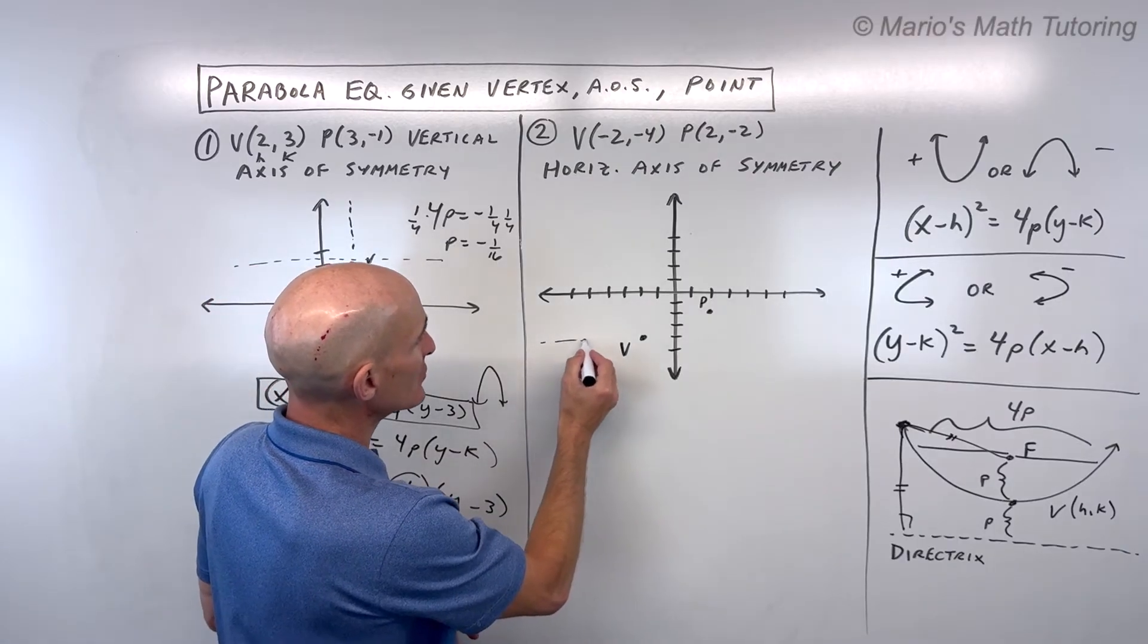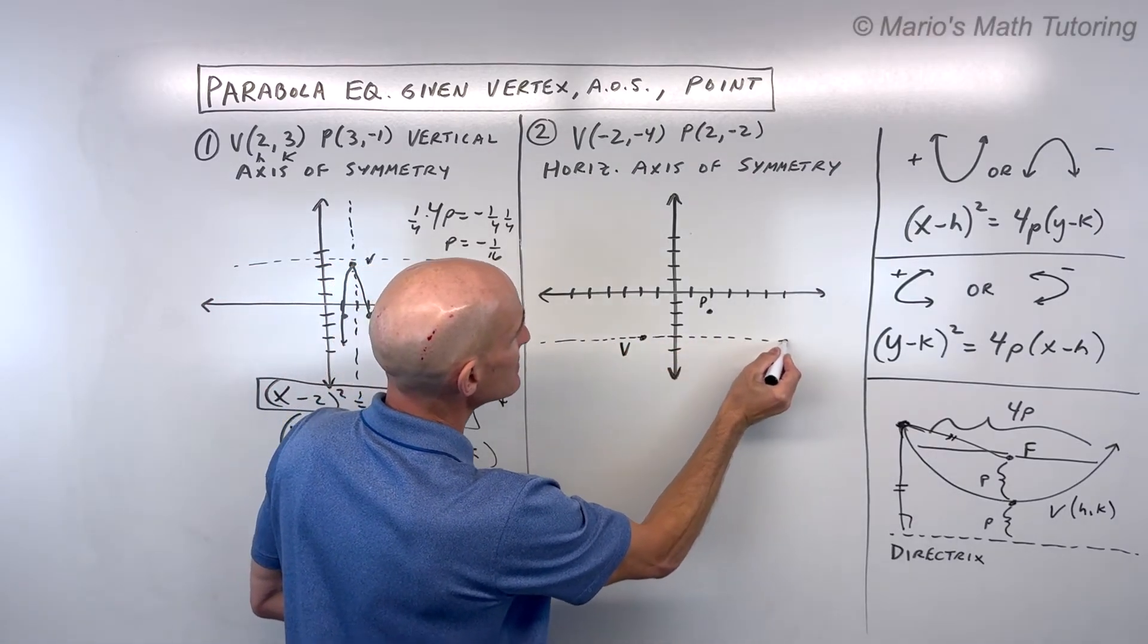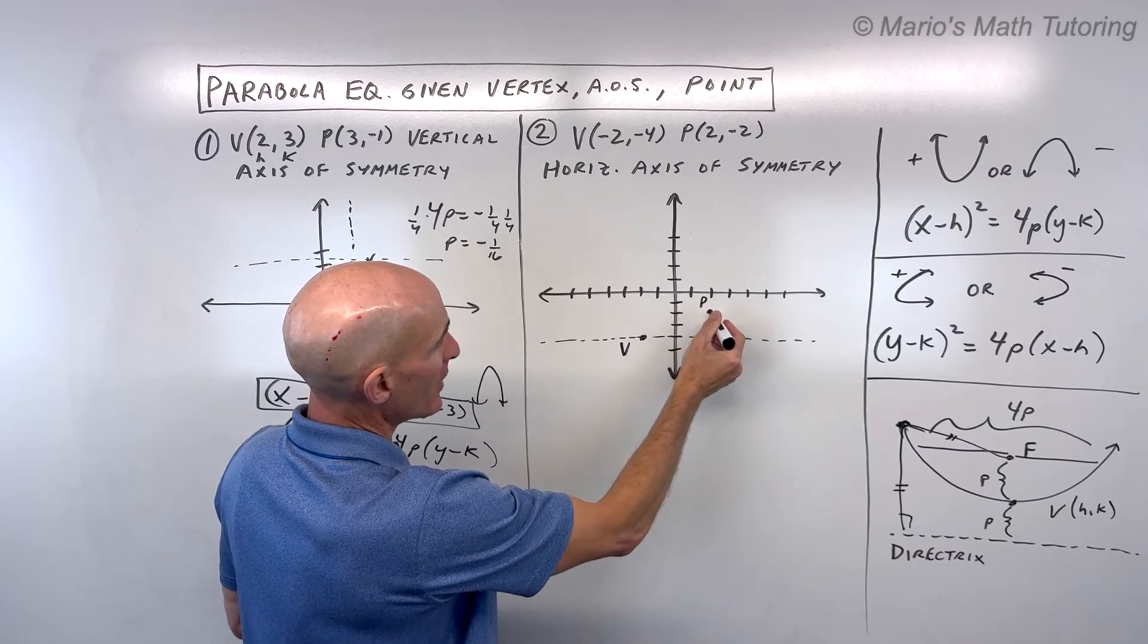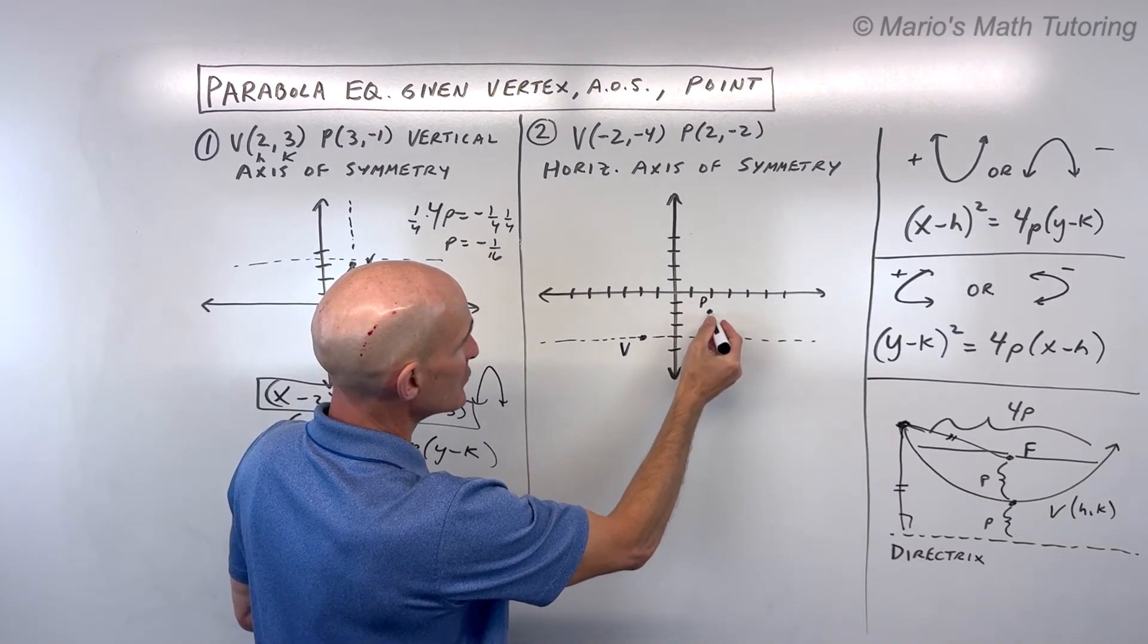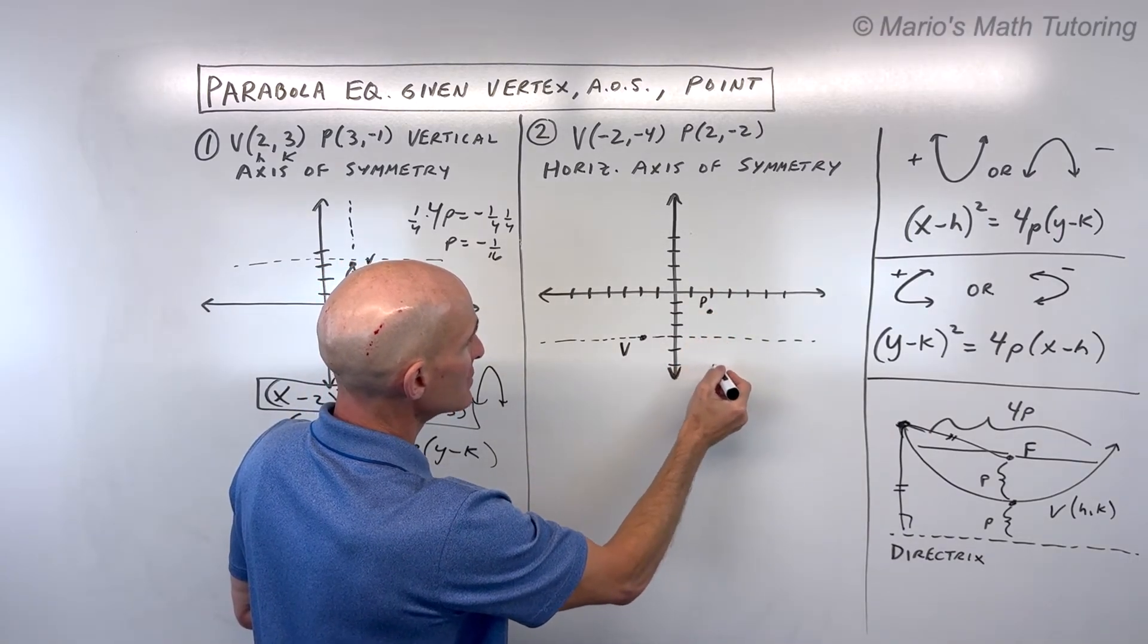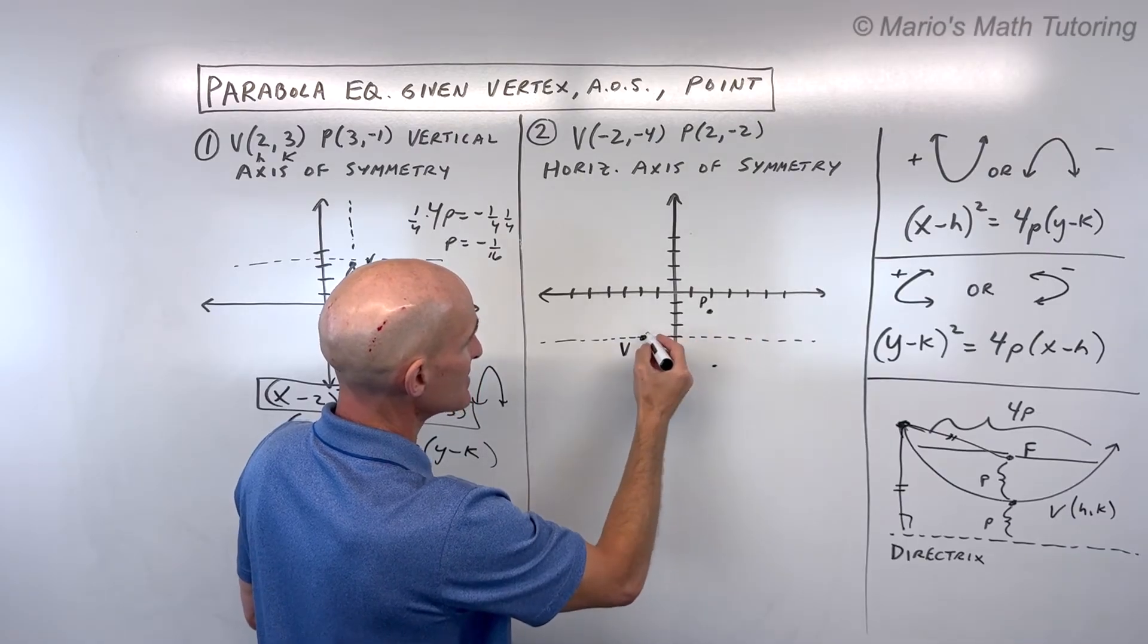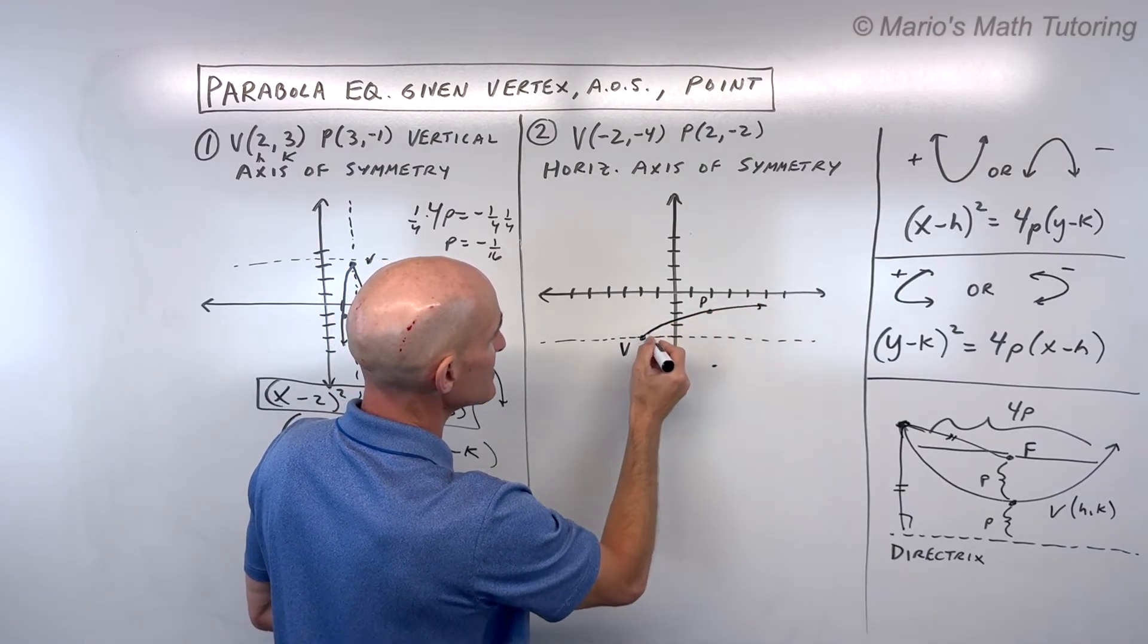So a horizontal axis of symmetry looks like this. If we fold this point over that axis of symmetry, let's see, 1, 2, 1, 2, so same distance from that axis of symmetry. Our graph should look something like this,